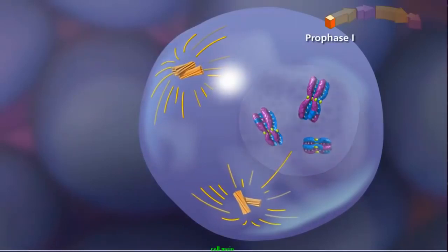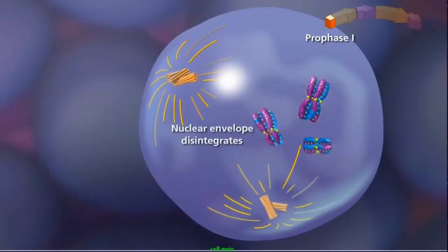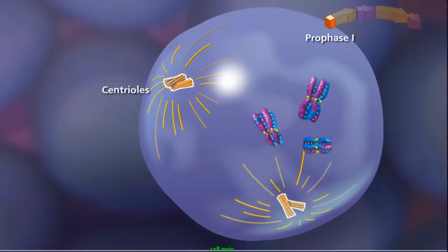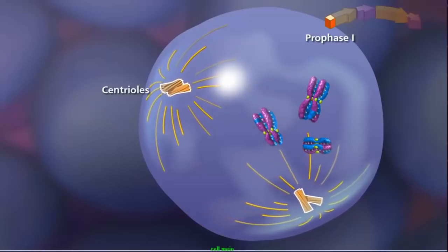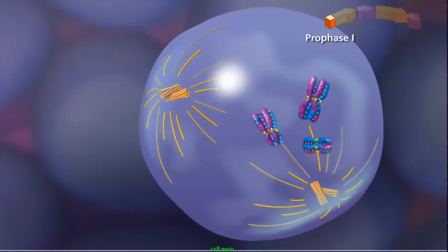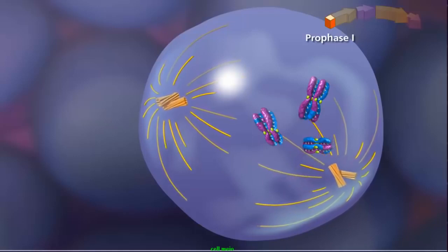Prophase I concludes with the fragmentation of the nuclear envelope as the duplicated centriole pairs move to opposite poles of the cell. As they move, the centrioles extend spindle fibers, forming the meiotic spindle.